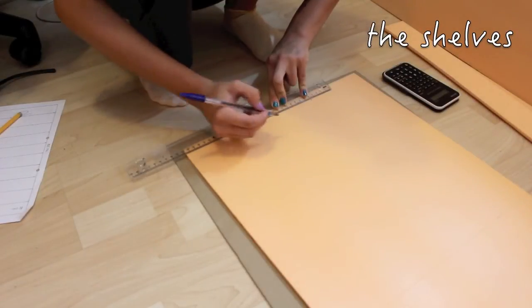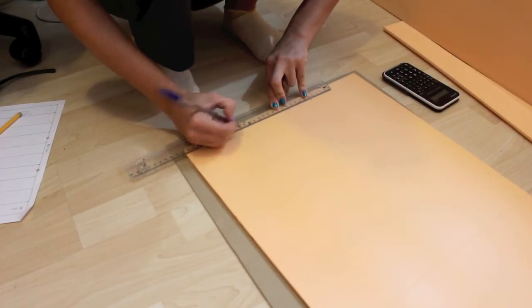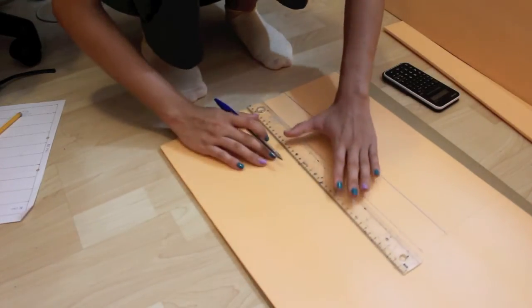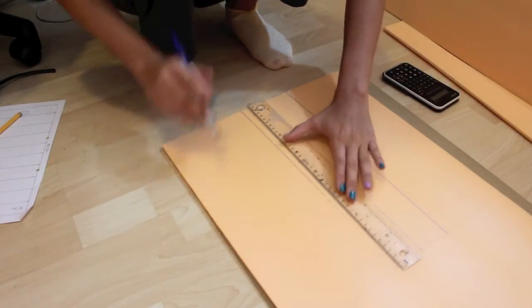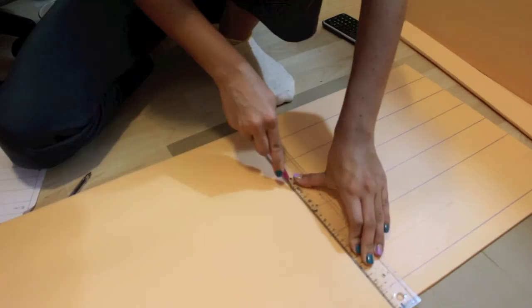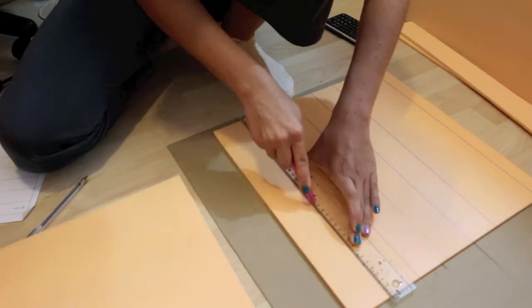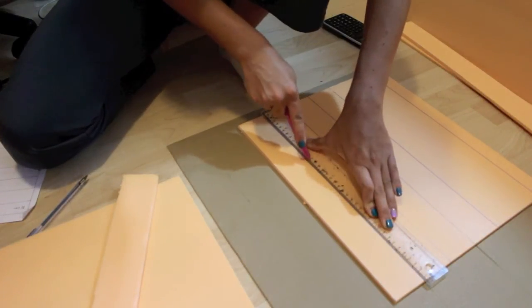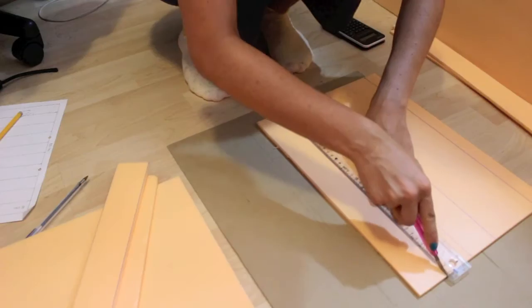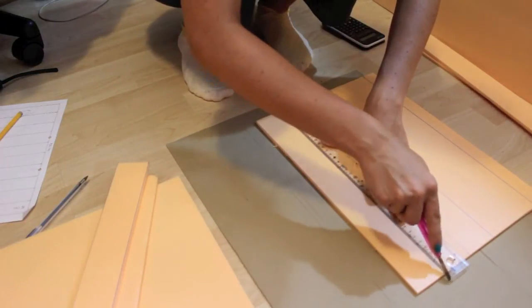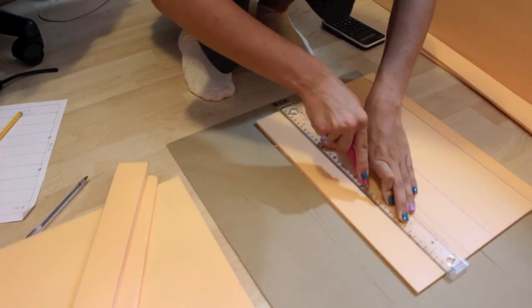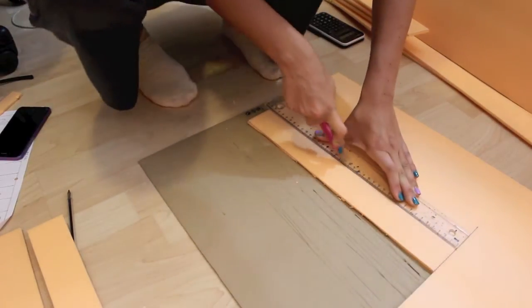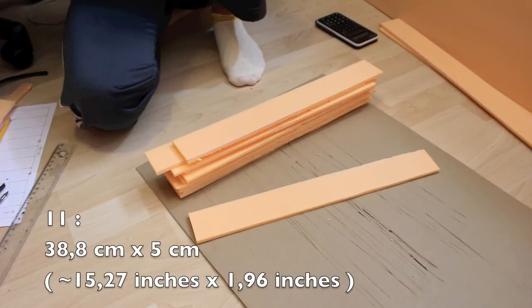Then it's onto the shelves. I want mine to be 5 centimeters wide and 38.8 centimeters long because my foam board is 0.6 centimeters thick, and I have to reduce that so everything matches perfectly. I'll end up having 11 shelves - 10 actual shelves and one will be the top. As you can see, you have to be really careful and patient while cutting because you want everything to be straight.